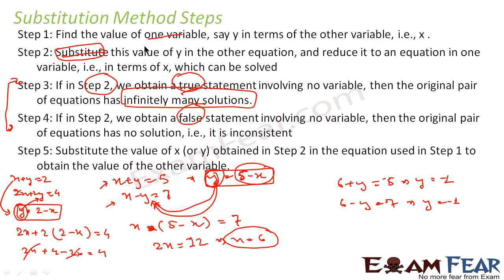Since we got infinite solutions, we stop and state that result — we can't find a unique value. But if we had gotten a concrete value like x equals 6, we would substitute it into the equation to find y. Step 5 only applies when you get a finite solution. From step 2 you either go to step 3 (infinite), step 4 (no solution), or step 5 (unique solution).